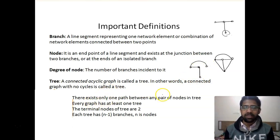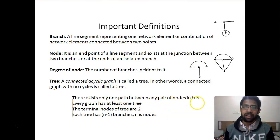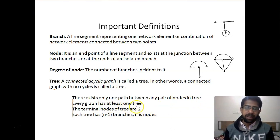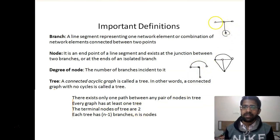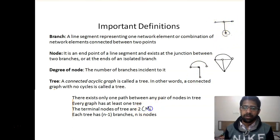What are the properties of a tree? There exists only one path between any pair of nodes in a tree. Every graph has at least one tree, though there may be many. The terminal nodes of a tree are at least two — minimum two terminal nodes.